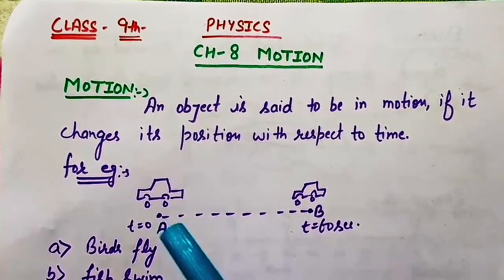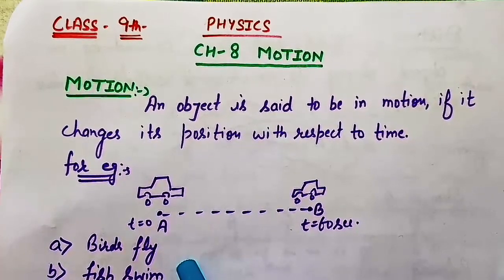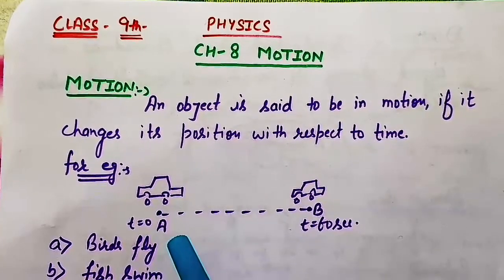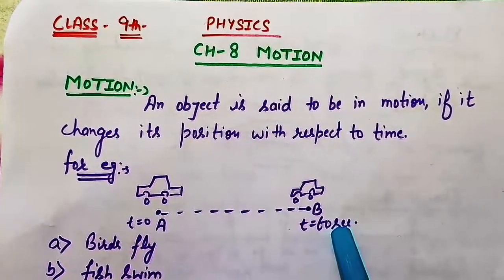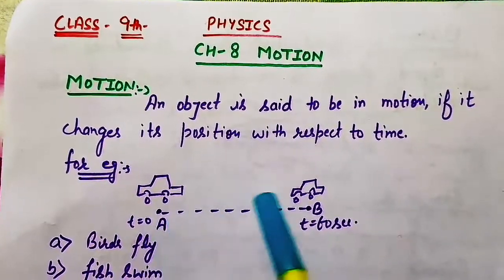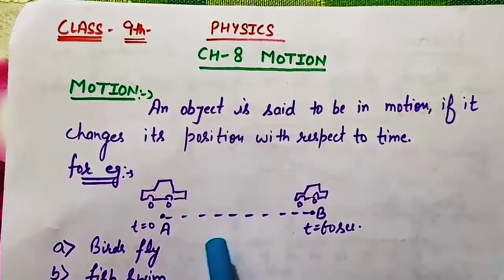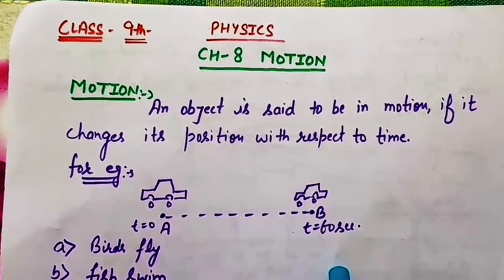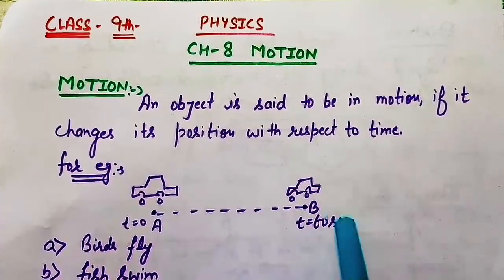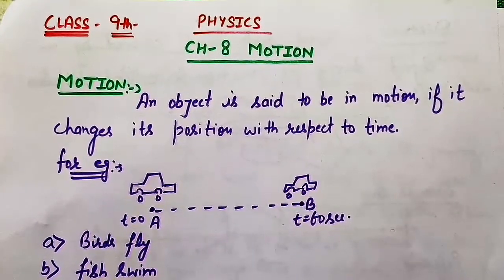For example, here we have a car which is at position A at time t equals 0. If it starts its journey from position A up to position B, after 60 seconds the car reaches from point A to point B. So during this time, from 0 to 60 seconds, the car's position changed from point A to point B. We can say this car was in motion because it was changing its position from one place to another.